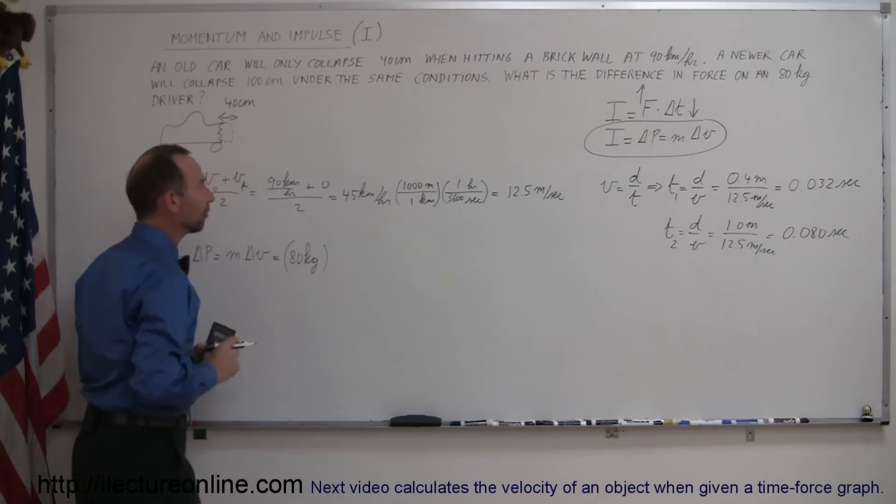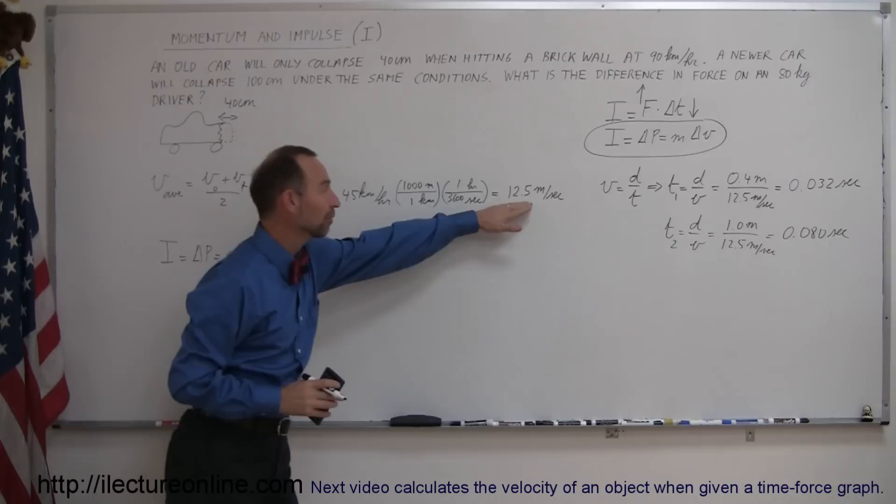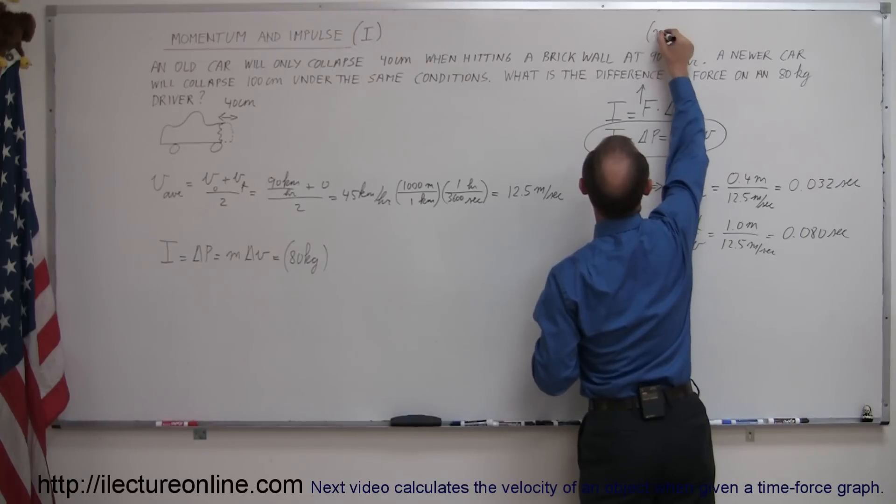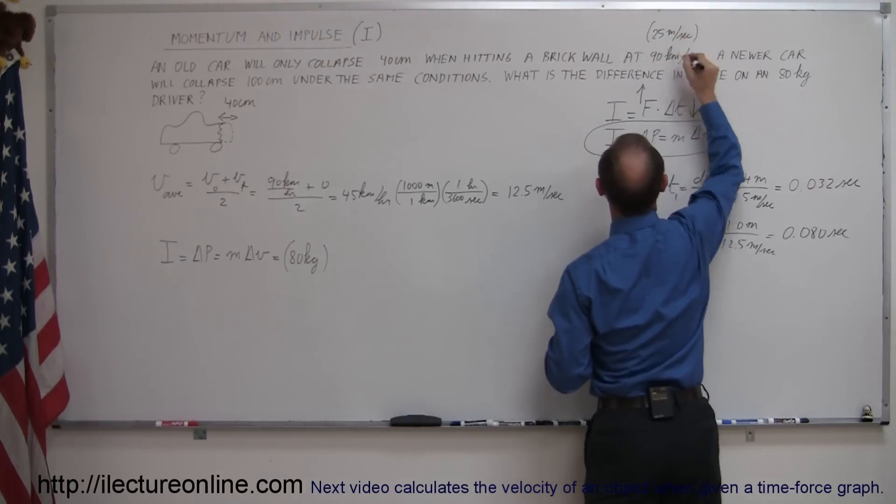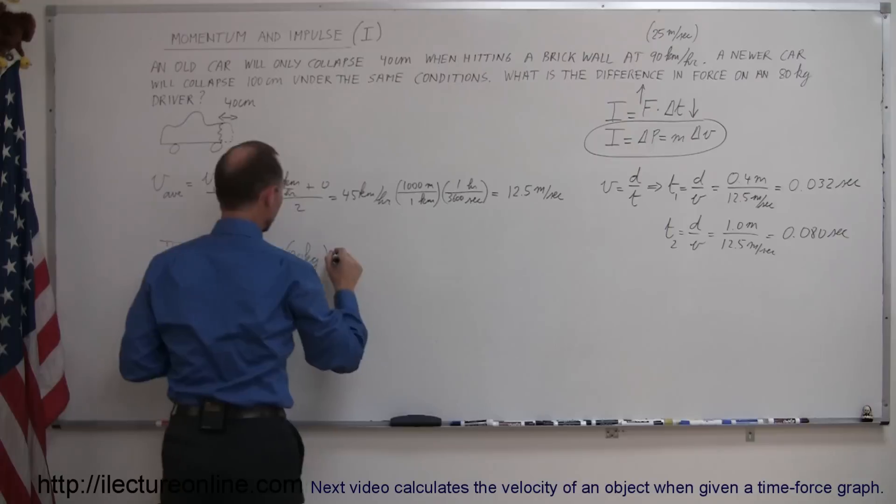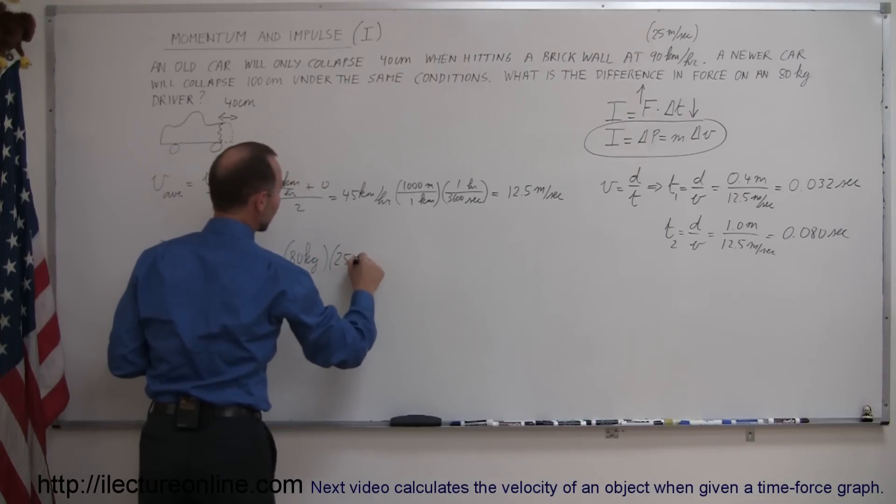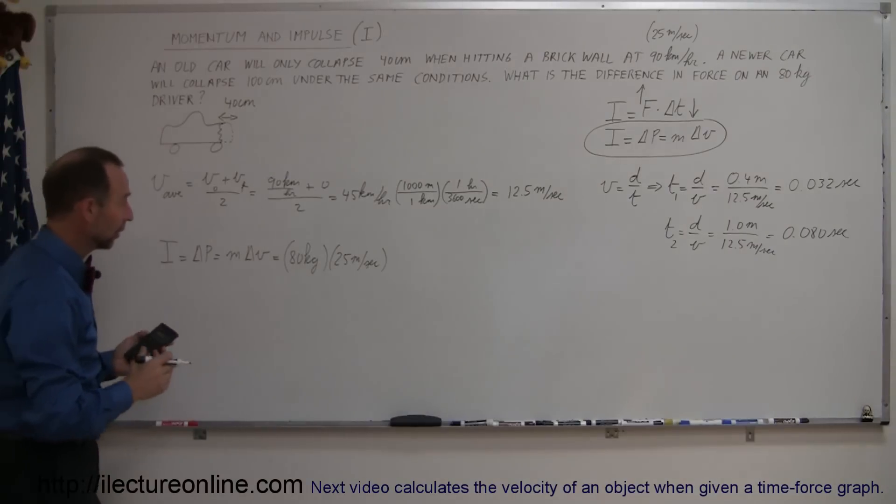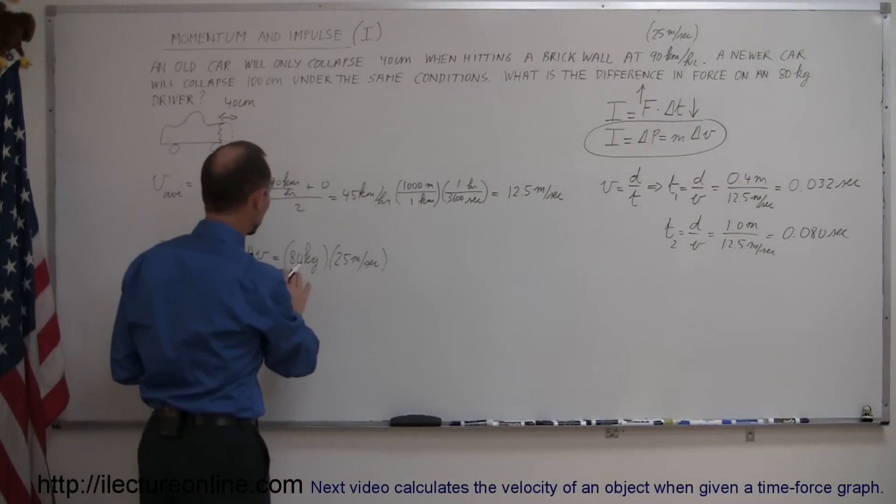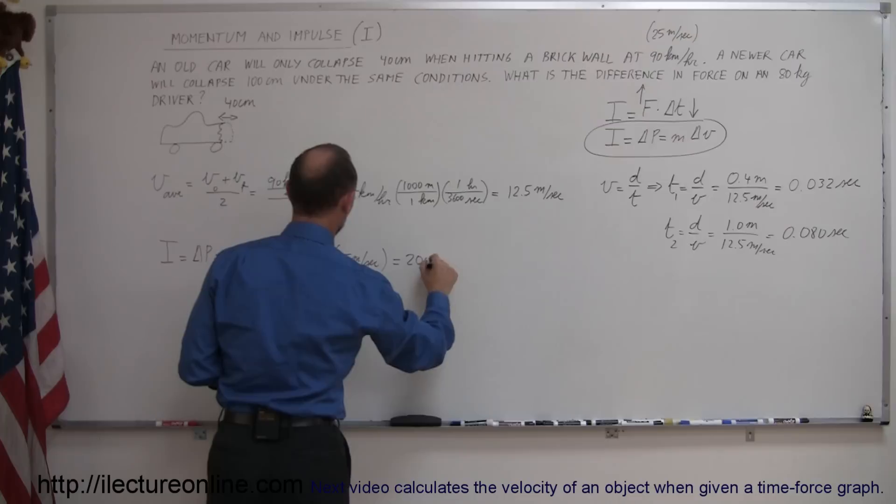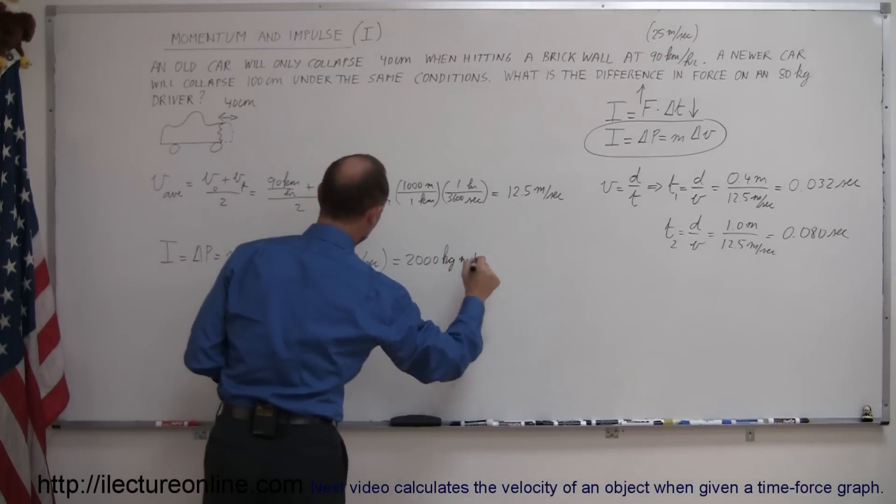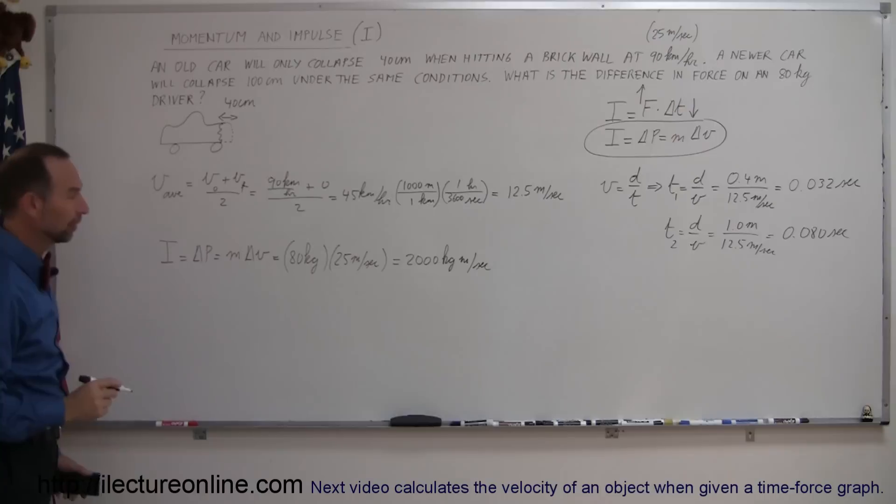And how much did the velocity change? Well, the average velocity was 12 meters per second, but at 90 kilometers per hour, the speed is 25 meters per second. So we can plug in 25 meters per second, that is the change in velocity, because the driver went from 25 meters per second to zero. So 25 times that would be 2,000 kilograms meters per second. So that's the impulse, which is also the change in momentum.